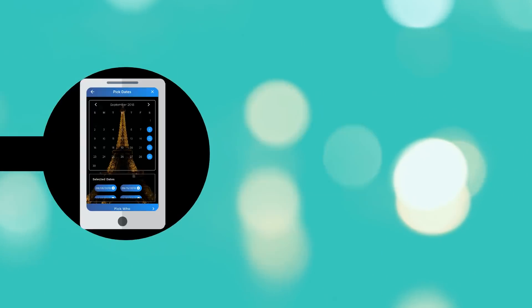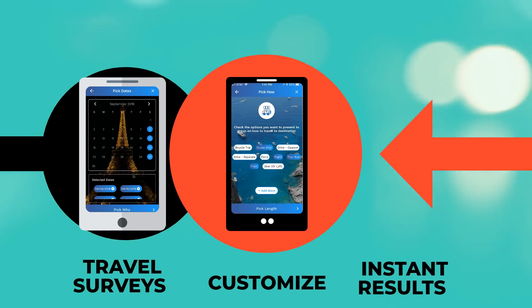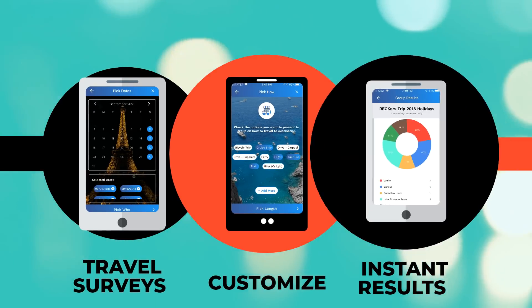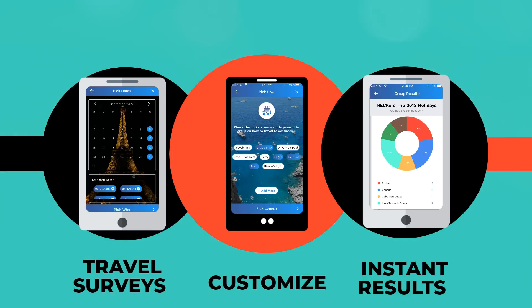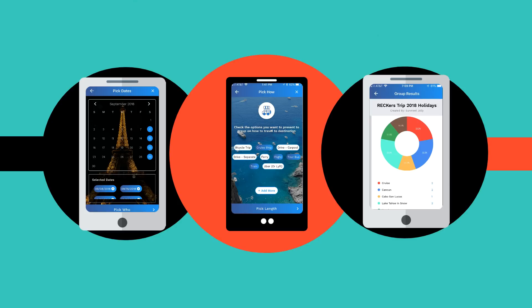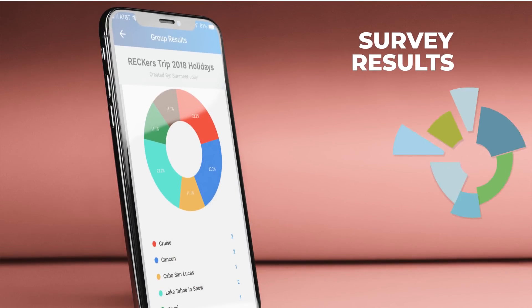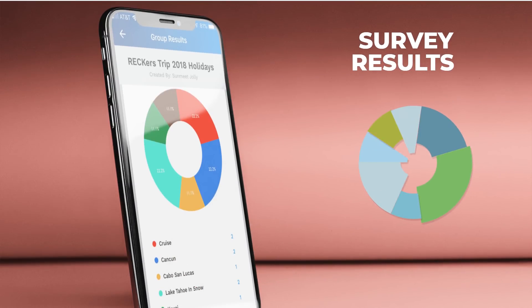Grotube provides travel surveys that you can customize to have your friends vote on dates, destinations, activities, etc. You can change the built-in survey by adding additional answers and questions, saving time, and using the convenience of your smartphone. Friends can see travel survey results on their smartphones as beautiful charts, updated instantly.